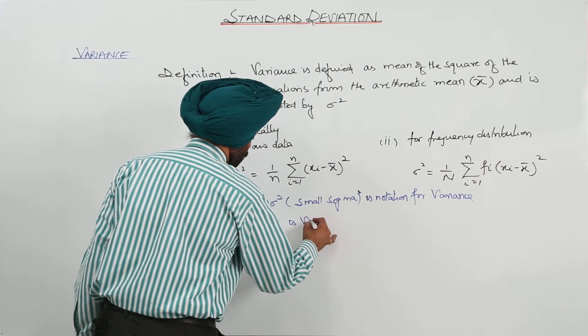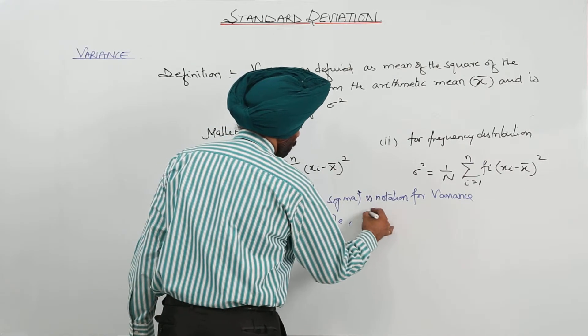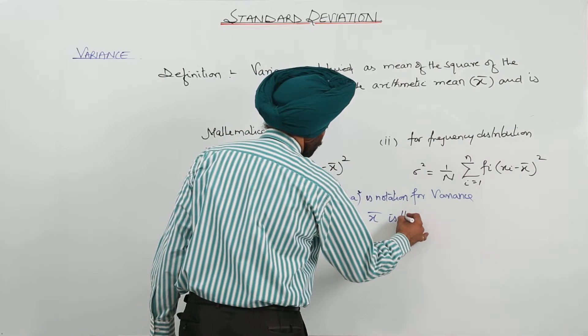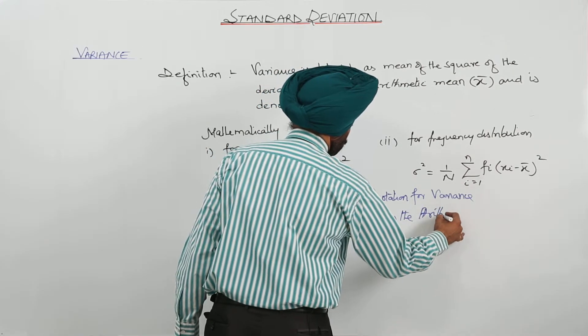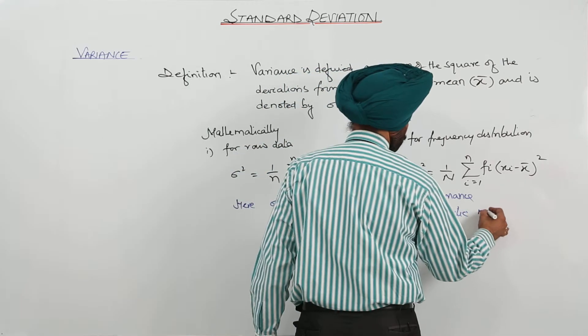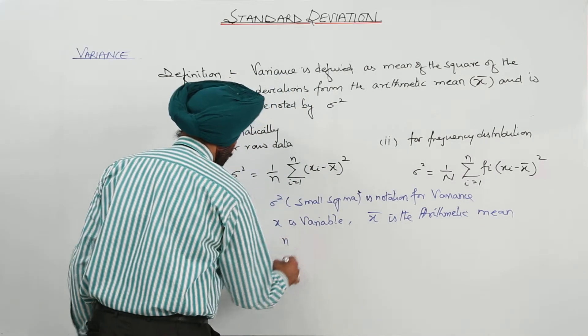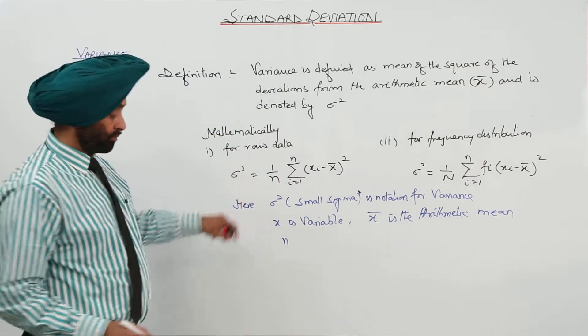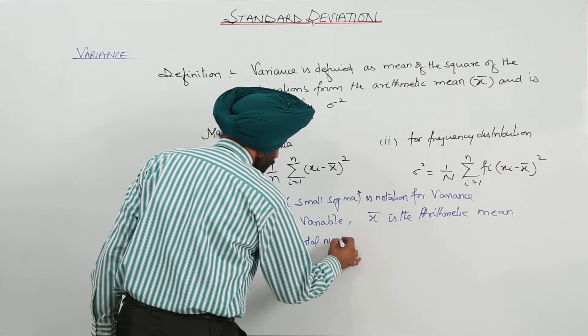X is variable. X bar is the arithmetic mean. N, in this case small n, total number of terms.